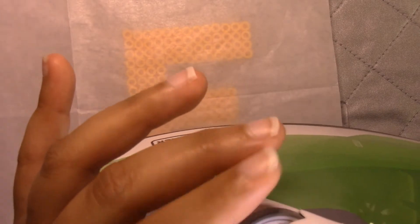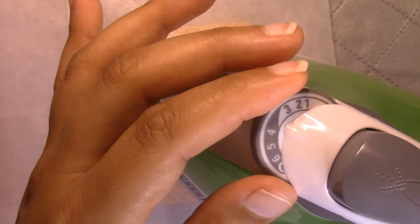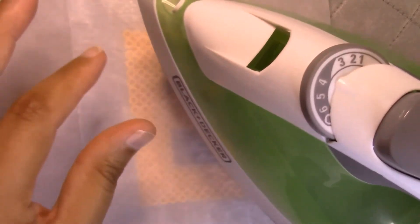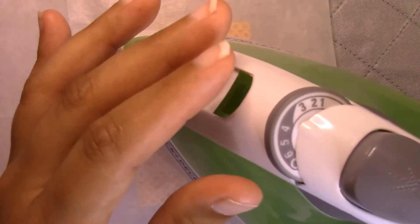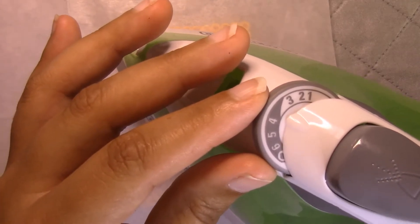My iron has 1 through 6 on it depending on the type of fabric that you're ironing. The instructions for perler beads say medium heat. I did try it at medium level and it was taking way too long to fuse my beads, and then they were fusing unevenly.